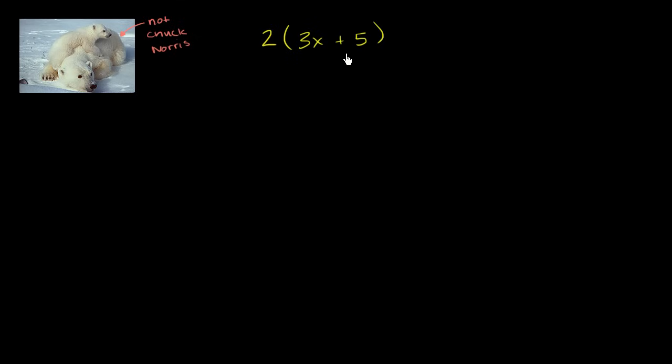Well, this literally means two 3x plus 5s. So this is the exact same thing as one 3x plus 5, and then to that I'm going to add another 3x plus 5. This is literally what 2 times 3x plus 5 means.